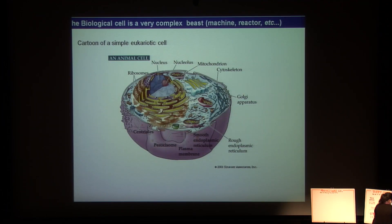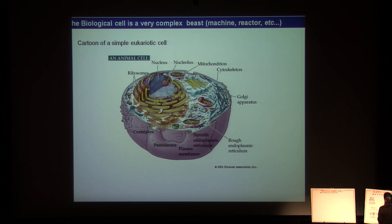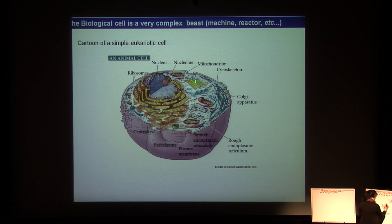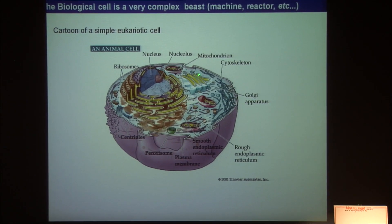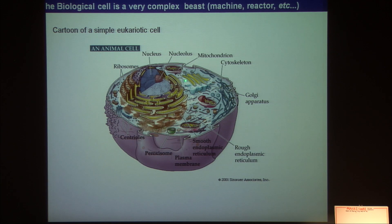The first thing that comes to mind when we are talking about biomedical modeling or computational biology is a cell. A cell is a very complex beast — it's a highly heterogeneous spatial structure where thousands of reactions take place simultaneously, and all those organelles are there to make sure the cell stays alive.